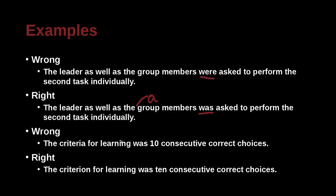'The criteria for learning was 10 consecutive correct choices.' The problem here is the number: inside your formal writing, if the number is 1 through 12, you should be spelling it out. If the number is bigger than that, then you should be writing the Arabic numeral. But otherwise, try to spell it out.